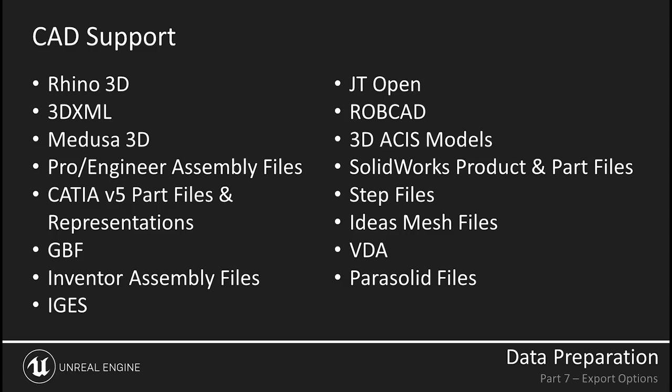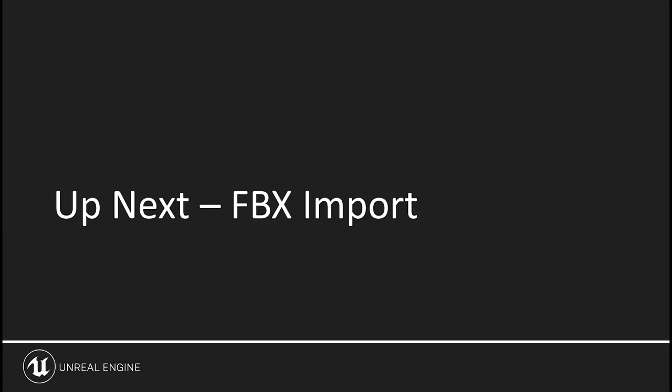Looking at the export location, the uDatasmith file is actually an XML file that stores all the export properties for all the various assets in our scene. Generally, you don't want to modify this — it points to all assets and gives Unreal the information it expects when importing the Datasmith file. Inside the associated folder, we have all the UDS mesh Datasmith mesh assets — all the different parts and pieces of the scene — as well as the textures and materials for those.